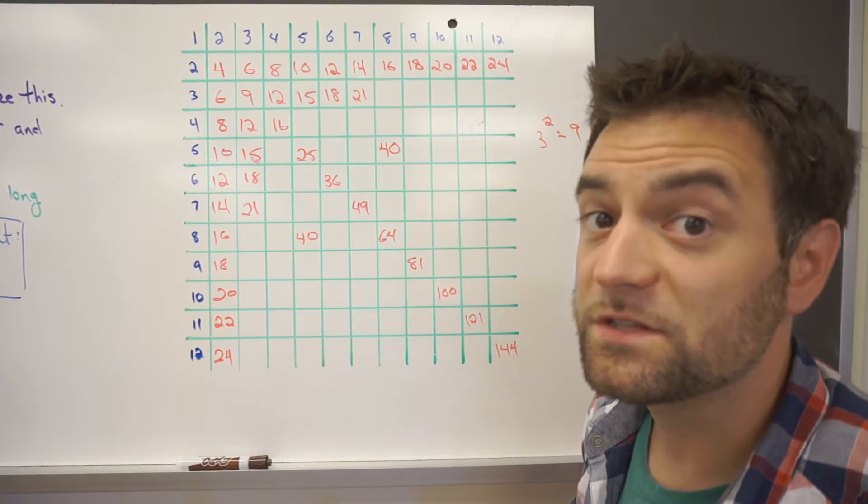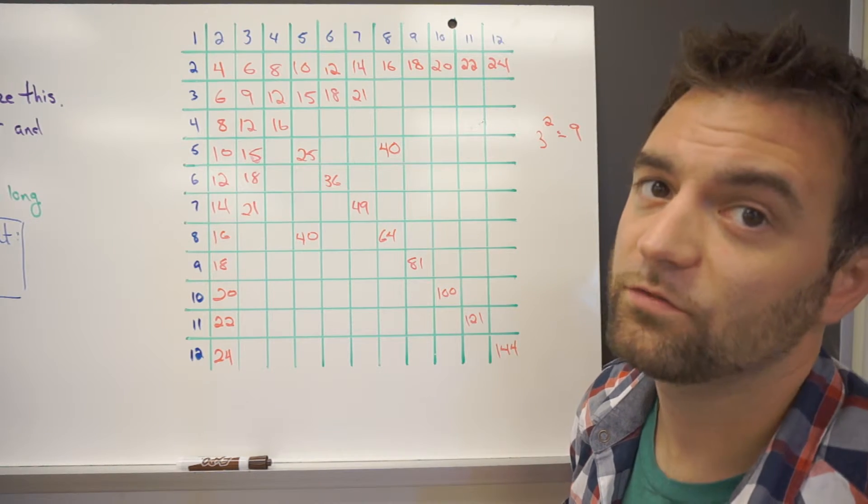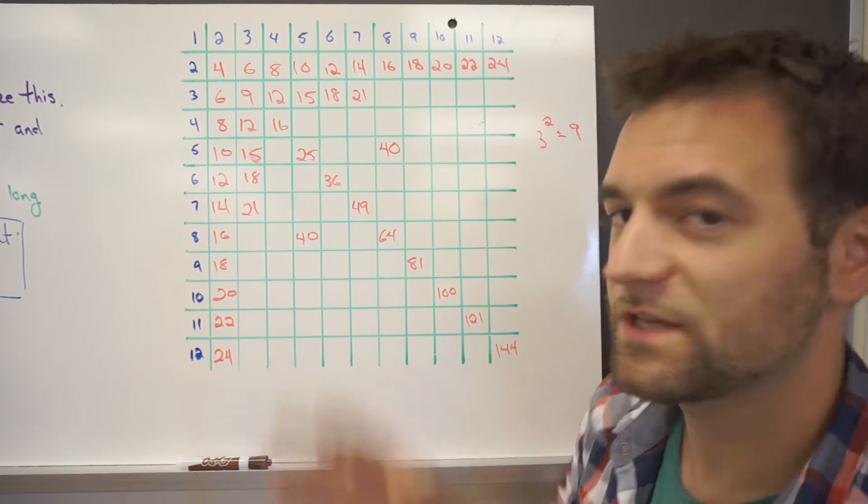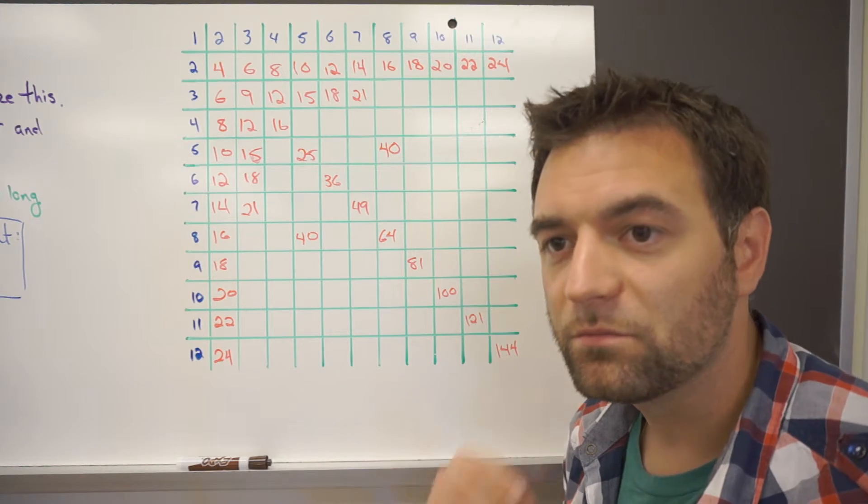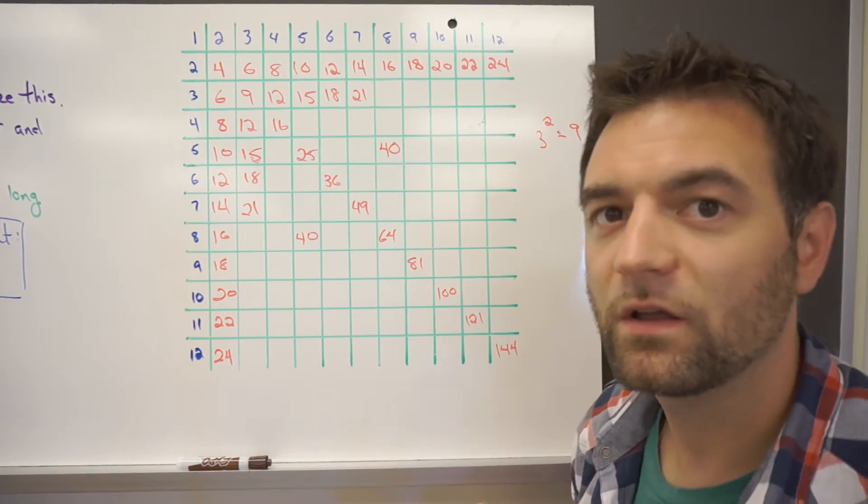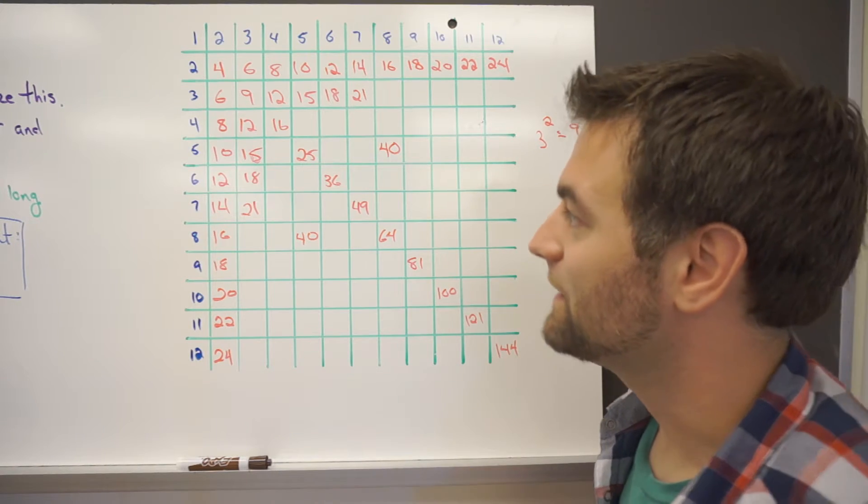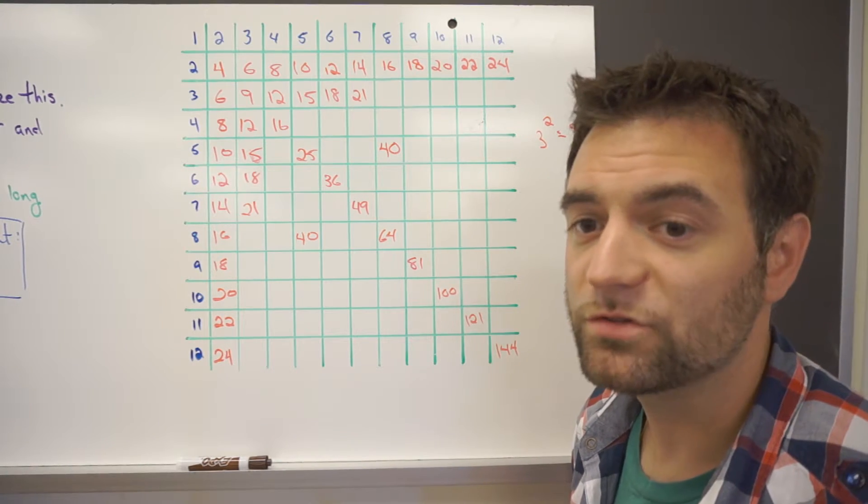And recognizing some of these different patterns helps, again, make math easier for you. If you can start picking up the different patterns and tables like this, you'll start associating those numbers with different movements in the table, making it more useful to you.